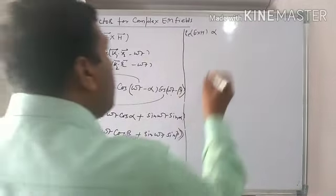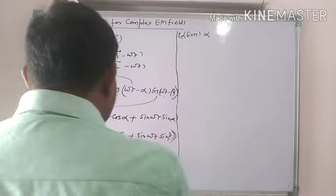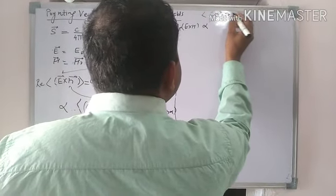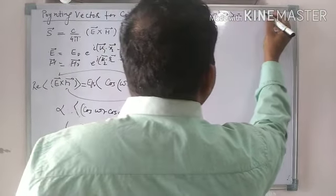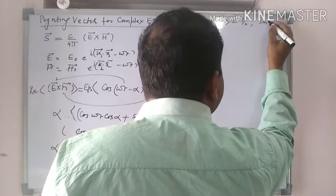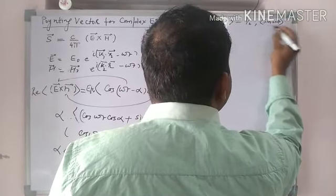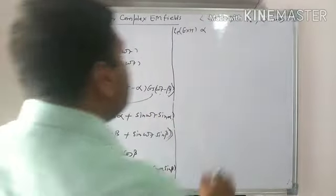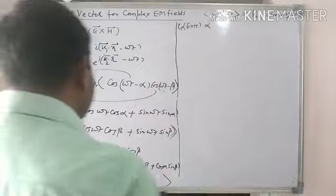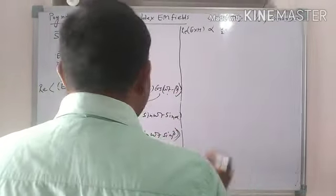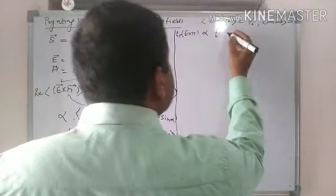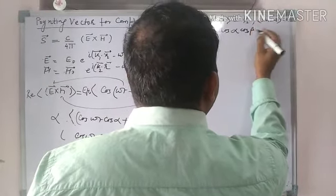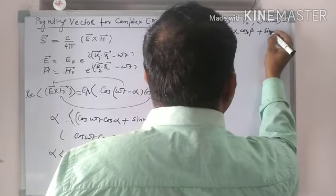So now we will take the averages. The average of cos²ωt we already should know, that this is essentially half. And then the average of sin of any angle, that's going to be zero. So if we use these things only the first and last term would survive. And we will have a factor of half. So therefore we will write this as ½(cos α cos β + sin α sin β).